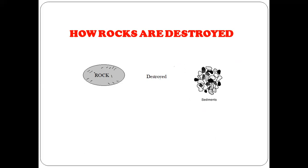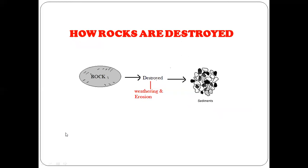There are different ways that rocks can be destroyed. Rocks can be destroyed to create sediment. Two of the processes that contribute to rocks being destroyed to create sediments are weathering and erosion, which are both processes of denudation. Denudation processes are processes that lower the land, so when weathering or erosion takes place, the rocks which are part of the land will be broken down into sediment.